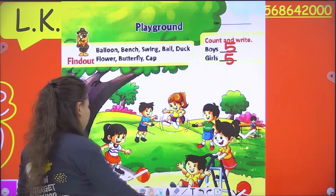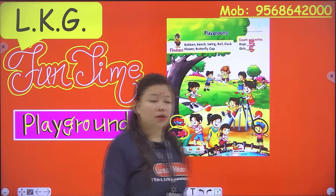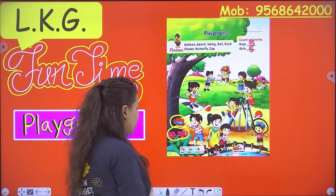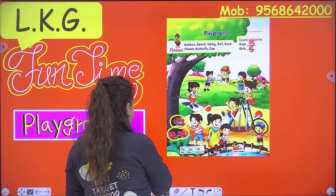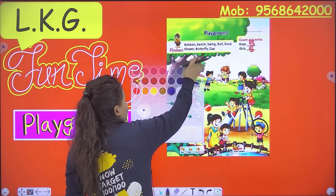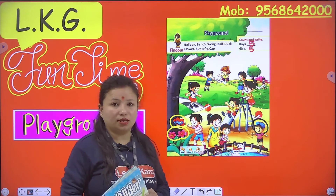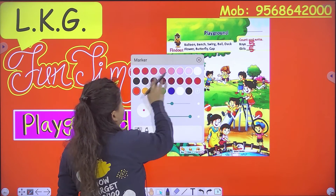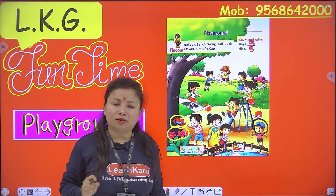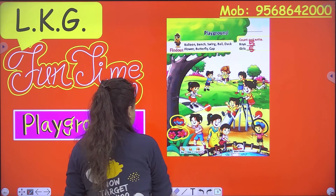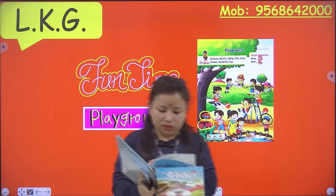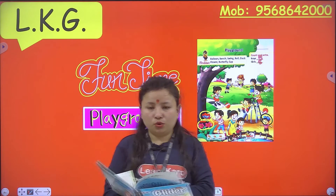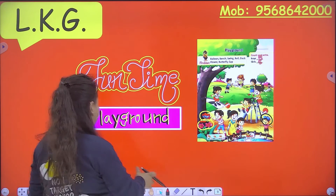Five boys and five girls. And what is the use of the playground? We play in the playground — we can run, we can swing, and we can do lots of things in the playground. So you have to complete that page in your book, page number 12. Next, we will learn and revise letters U to Z. Take care and goodbye, my dear students!